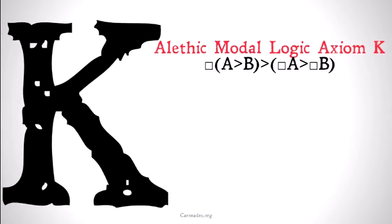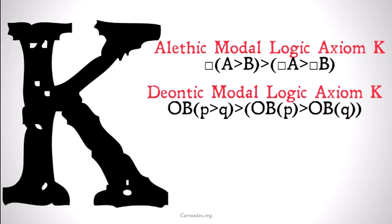In alethic modal logic, axiom K looks like this: it's necessary that A implies B, implies that it's necessary that A implies it's necessary that B.